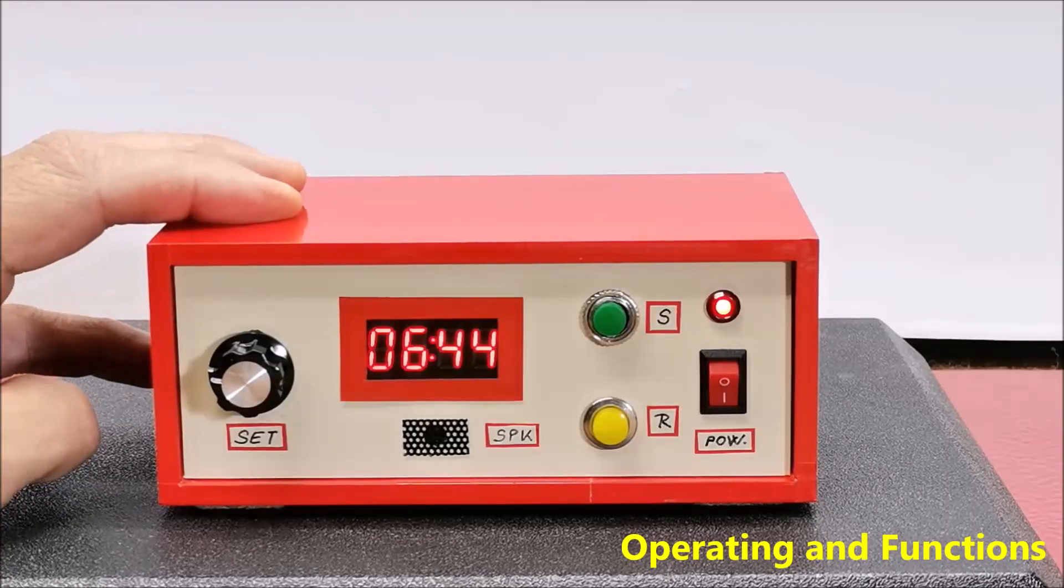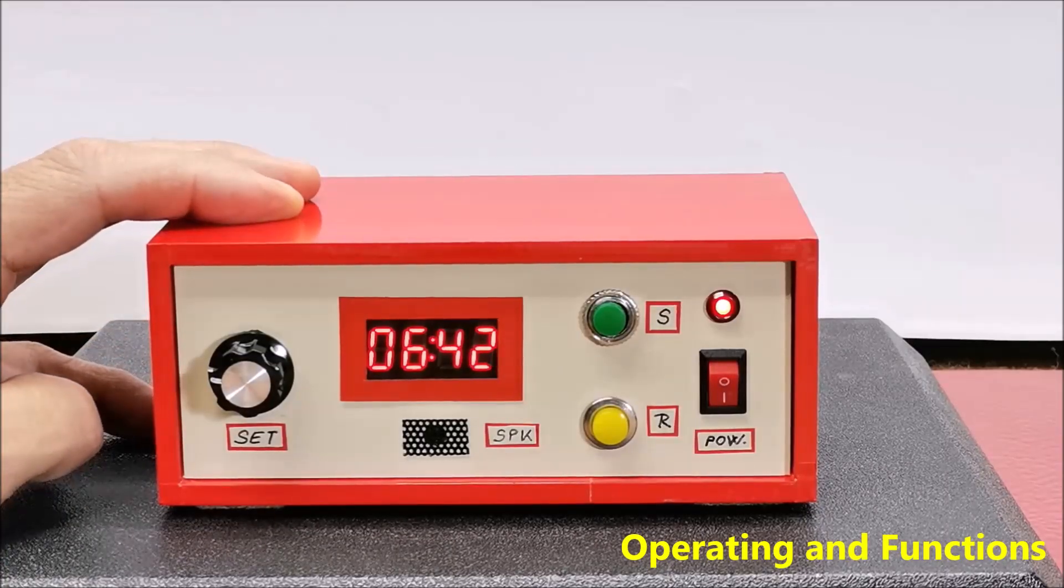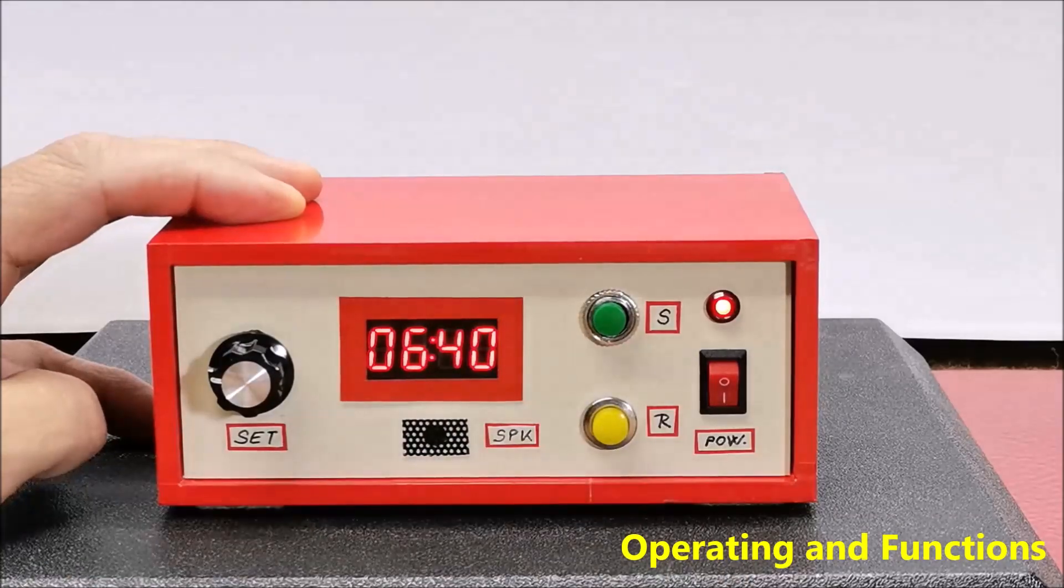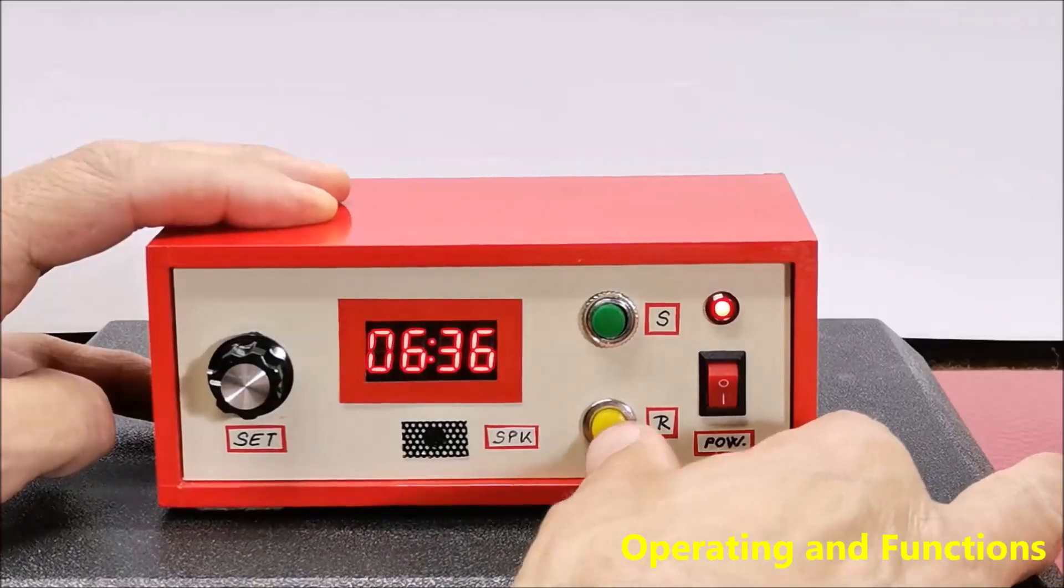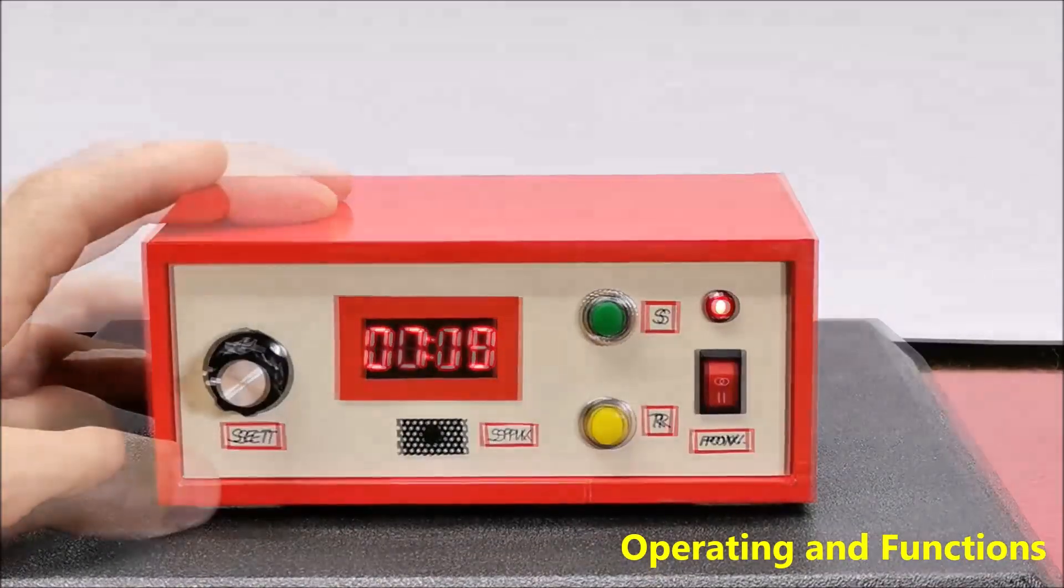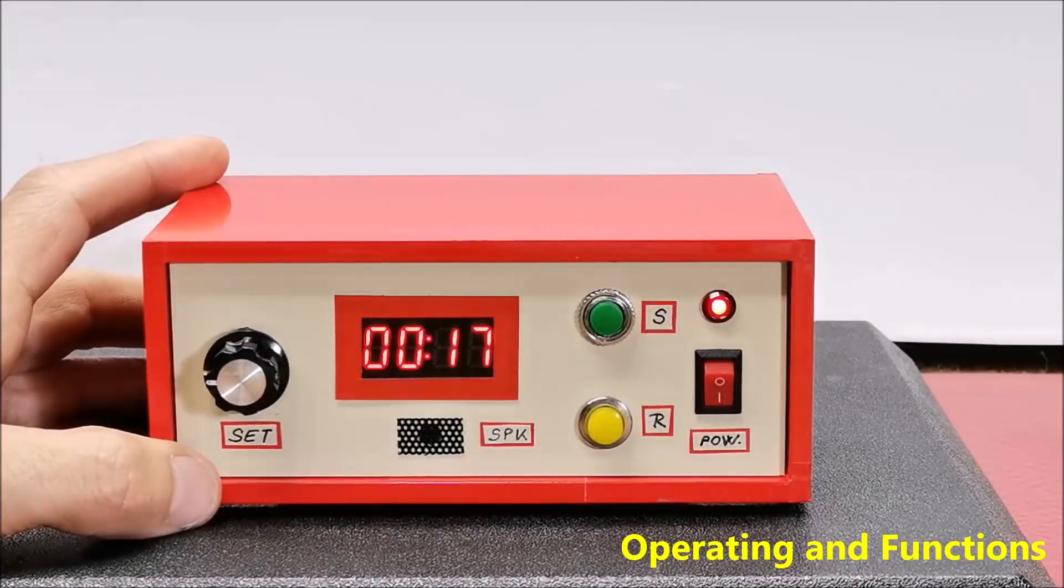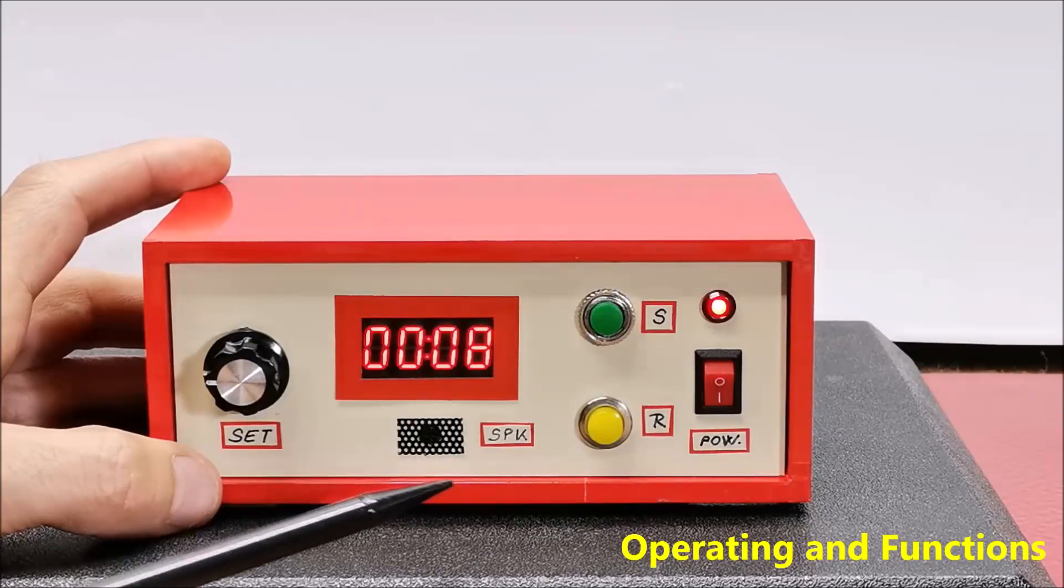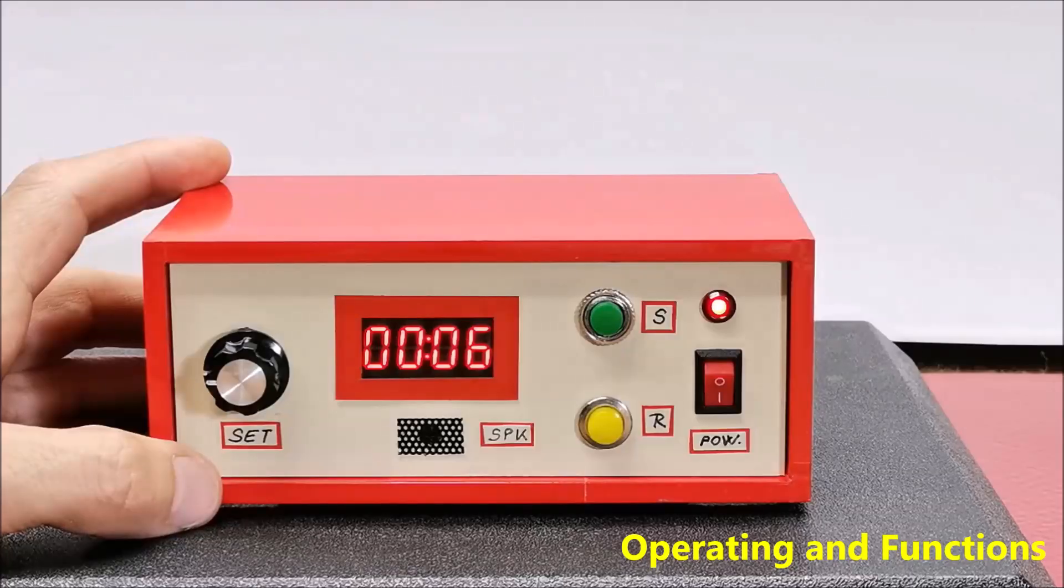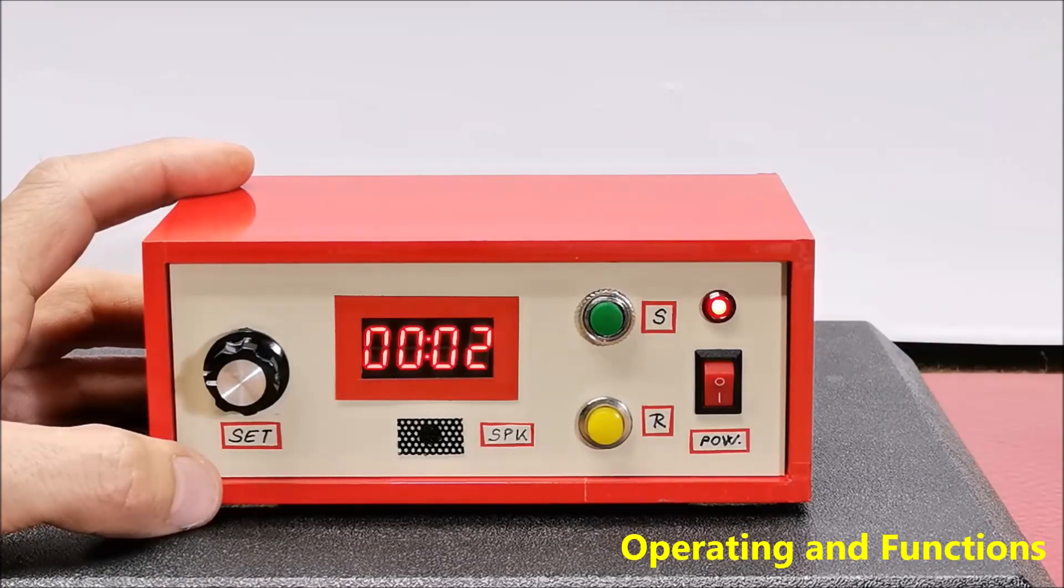If at any time during the process we press the reset button, the time returns to the original set state. The end of the set time is signaled by an intermittent tone of the buzzer as well as alternating flashing of the numbers, in this case four zeros on the display. This lasts until we press the reset button after which the device is ready for operation again.